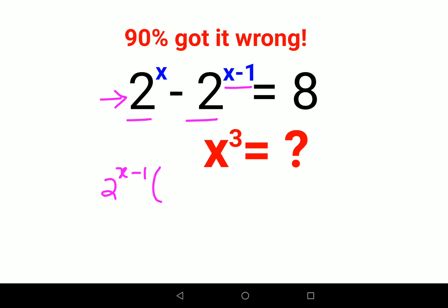Here, what will be left? If I take 2 raised to x minus 1 common, I'm just left with one single value of 2. So this is 2 raised to x minus 1 into 1 equals 8.